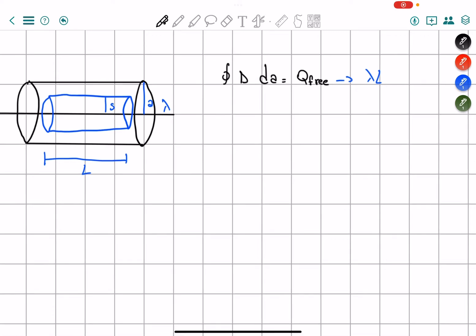And our A, of course, is going to be solved as absolute value of D times 2 pi S times L. So it's equals to lambda L.